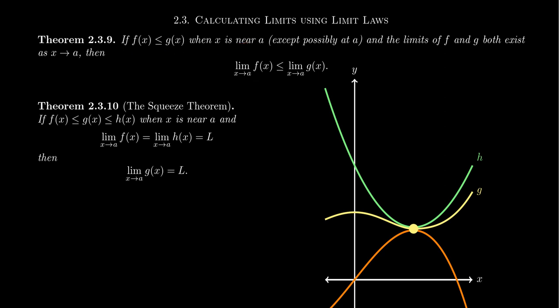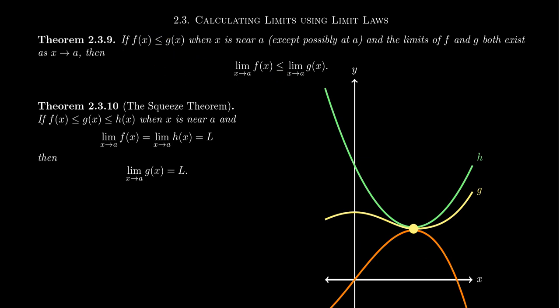One thing to point out: if we made a slight modification — if we changed this to f(x) strictly less than g(x) — we still must keep less than or equal to in the conclusion. Because even if f is strictly less than g(x), as we get closer and closer to a and we take the limit, equality could be obtained even when there was strict inequality everywhere else. So applying this principle twice — stacking one inequality on top of another — we can sandwich a function f between two other functions and apply this principle to get the so-called Squeeze Theorem.